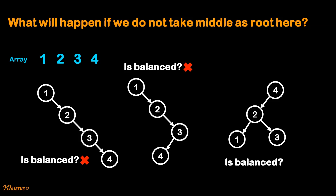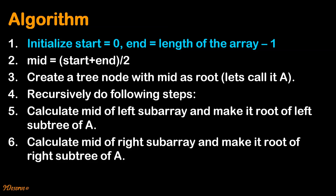Now let's have a look at the algorithm for solving this problem. These steps will be explained in detail with an example in subsequent slides, so do not worry if you do not get it right away. We initialize start equal to 0 and end equal to length of array minus 1. We calculate mid which is start plus n divided by 2, then create a tree node with mid as root — let's call it node a.